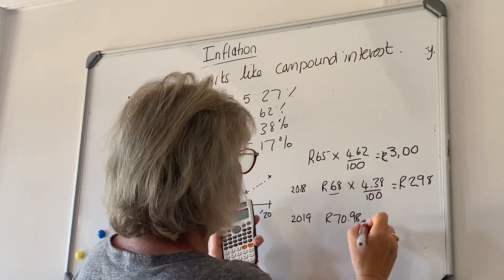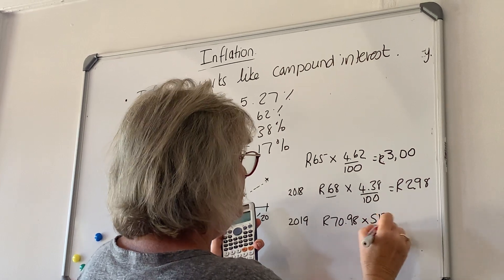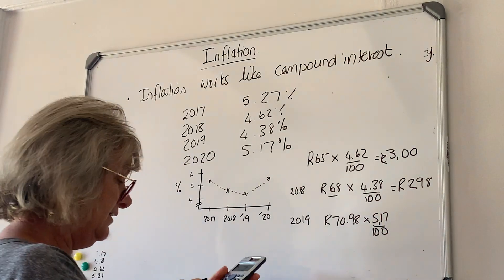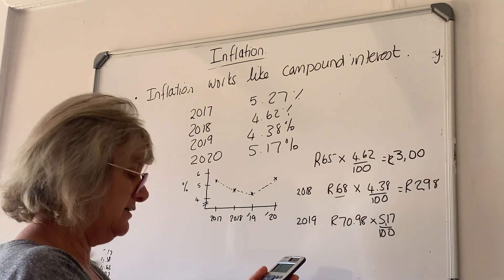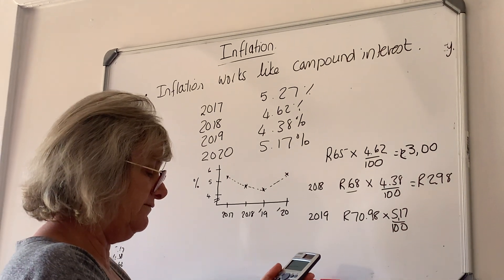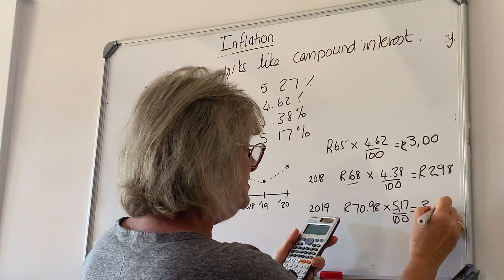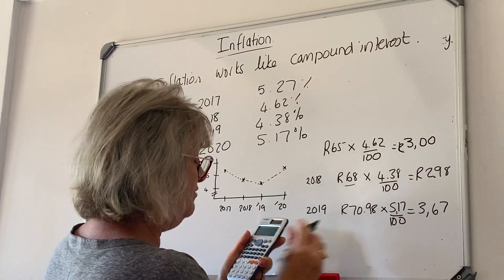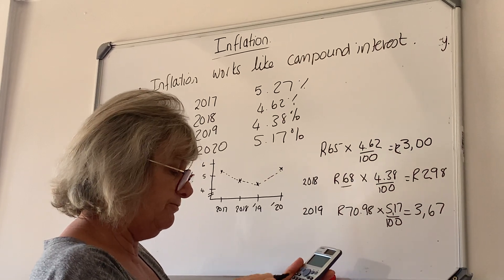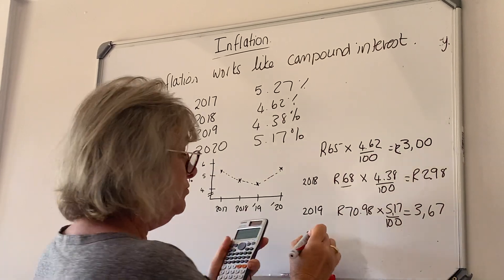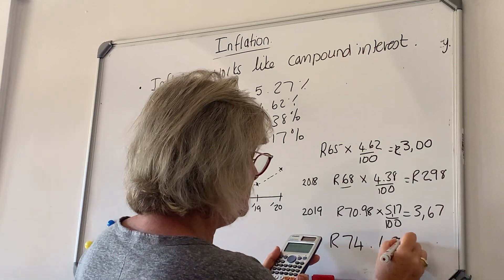Coming into 2020, we take 70 rand 98 and multiply by 5.17 divided by 100. That gives 3 rand 67, and adding that to 70 rand 98, the price would now be 74 rand 65.